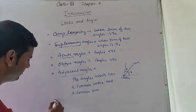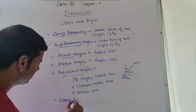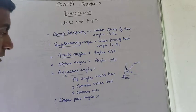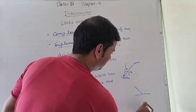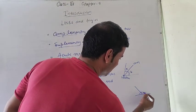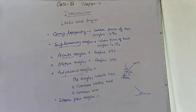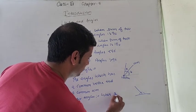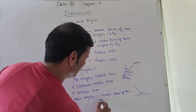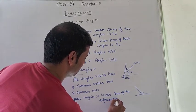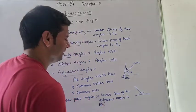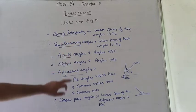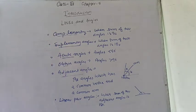Next is linear pair angles. Linear pair angles have a sum of 180 degrees, and they must also be adjacent. When the sum of two adjacent angles is 180 degrees, they are known as linear pair angles. Linear pair angles are also supplementary angles, but they must be adjacent.